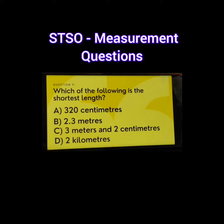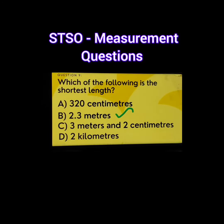Question number 9. Which of the following is the shortest length? A. 320 cm, B. 2.3 m, C. 3 m and 2 cm, D. 2 km. The correct answer is 2.3 m.